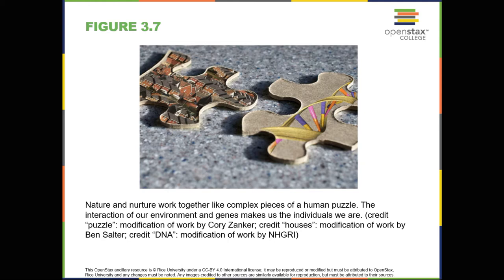Another perspective on the interaction between genes and the environment is the concept of genetic-environmental correlation. Stated simply, our genes influence our environment, and our environment influences the expression of our genes, as shown in Figure 3.7. Not only do our genes and environment interact, as in range of reaction, but they also influence one another bi-directionally. For example, the child of an NBA player would probably be exposed to basketball from an early age. Such exposure might allow the child to realize his or her full genetic athletic potential. Thus, the parent's genes, which the child shares, influence the child's environment, and that environment in turn is well-suited to support the child's genetic potential.